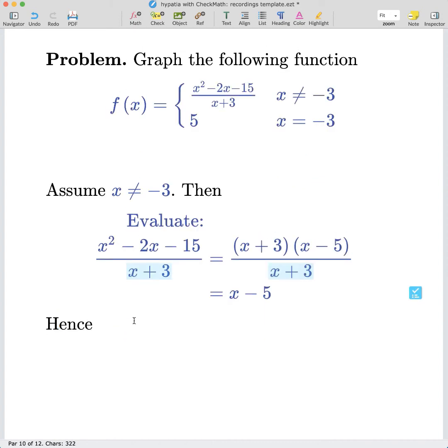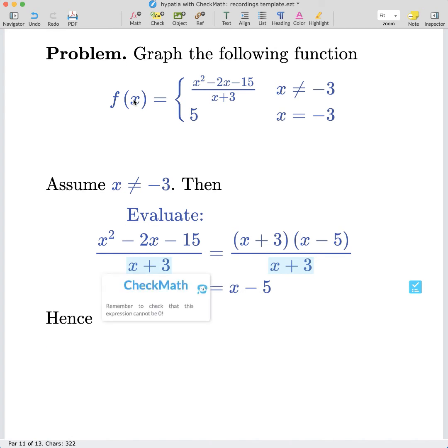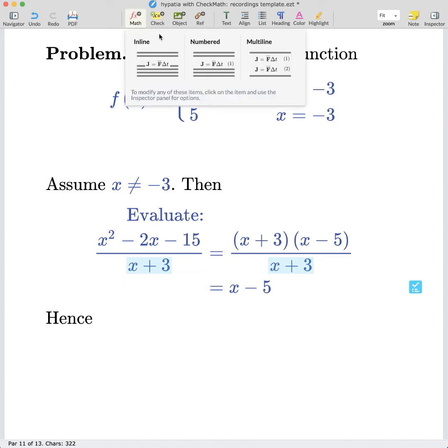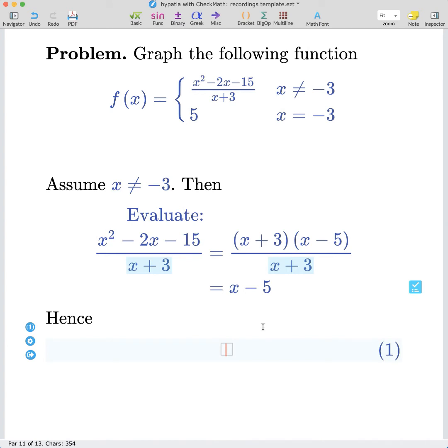So we can write, for example, hence, now again with the numbered math, we write f of x as before equals, and then a piecewise case from the multiline menu. And now we can know that this is just x minus 5 for x not equal to negative 3.